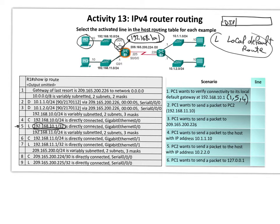We select the one with the maximum number of ones, which in that case is 32. Now for the next exercise: PC1 wants to send a packet to PC2. The IP address for PC2 is 192.168.11.10. Which lines match? Line one matches. Line six or seven requires an exact match of 32 bits — all 32 bits must match, which means the IP address should be 192.168.11.1.